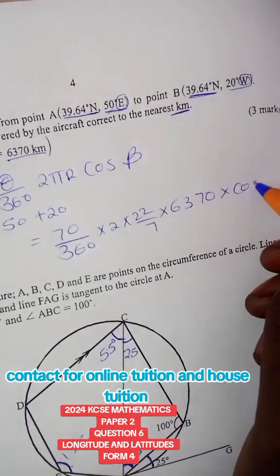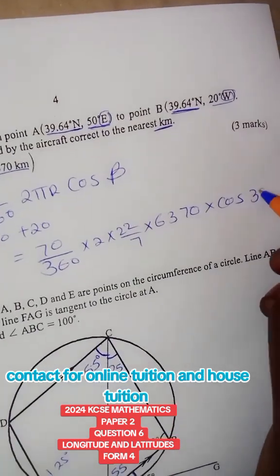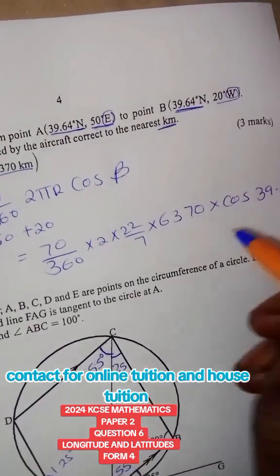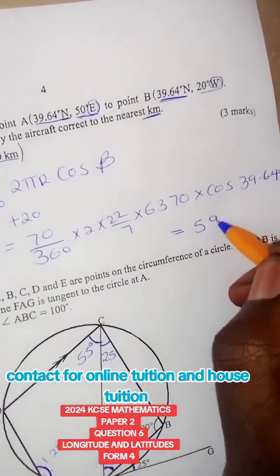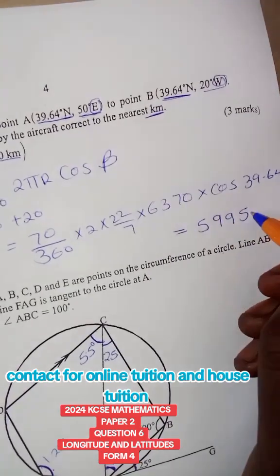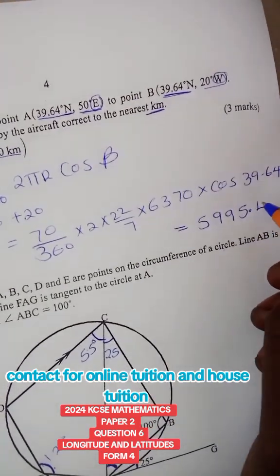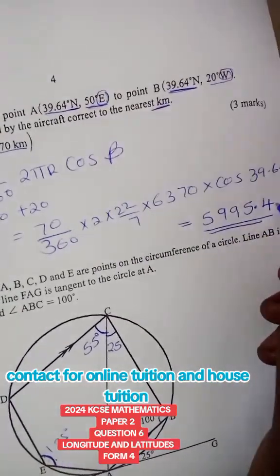So by doing calculation here, I will have 5995.4 to one decimal place kilometers.